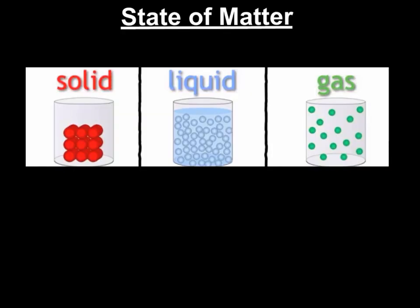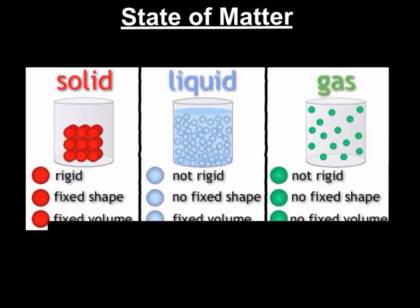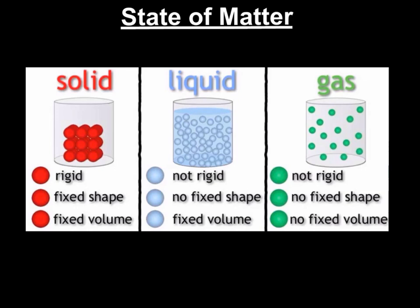State of matter is our last observable property. We have solids, liquids, and gases. Look at how the particles are arranged for the different states of matter. Solids are rigid, have a fixed shape, and a fixed volume. Liquids are not rigid, have no fixed shape because they take the shape of whatever they're in, but they do have a fixed volume. Gases are not rigid, have no fixed shape, and no fixed volume because we really can't contain them to measure it.